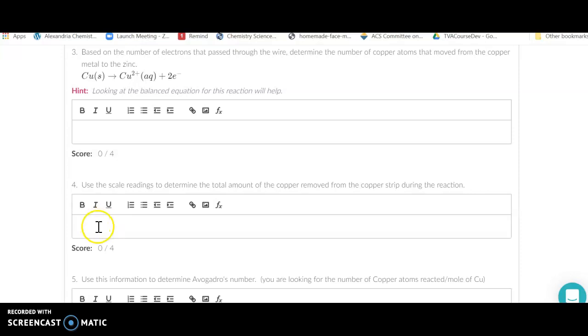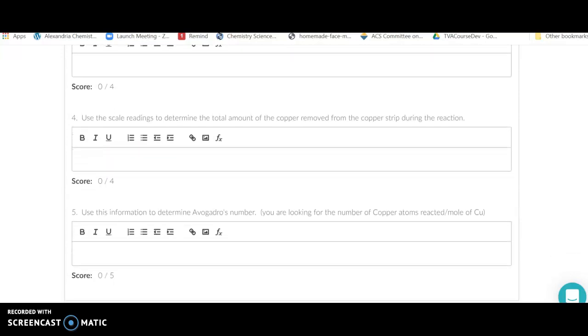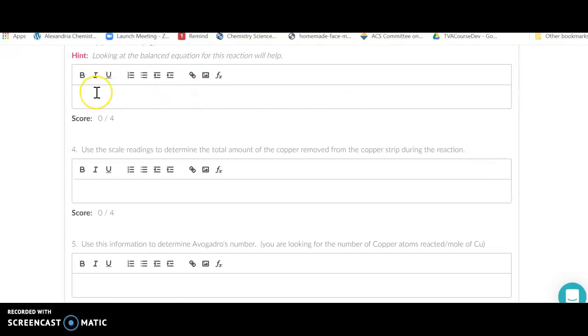Once you have the number of grams of copper that has reacted, you can look up the molar mass of copper and you're going to get moles of copper. The last step is realizing that if you take part three, which is atoms of copper, and divide it by part four, which is moles of copper, you're going to get atoms of copper per mole of copper, which is going to be our approximation of Avogadro's number.